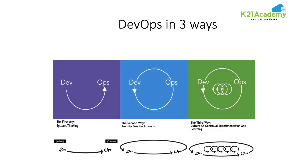The next way is amplifying feedback loops. You should obviously get a lot of feedback from the developer and the operations team to each other so that they can improve their process. There are multiple ways to give feedback — we will be seeing those on the next slide.